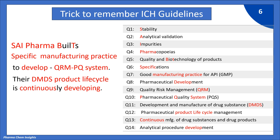Pharma decodes Q4 guidelines pharmacopeias. Built — B and T — decodes the fifth guideline Q5, quality and biotechnology of products. Specific decodes Q6 guidelines specification. Manufacturing practice decodes Q7 guidelines, good manufacturing practice for APIs. To develop decodes Q8 guidelines pharmaceutical development. QRM decodes Q9 guidelines quality risk management. PQ system decodes Q10 guidelines pharmaceutical quality system.